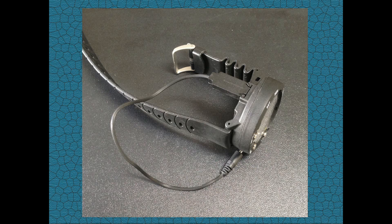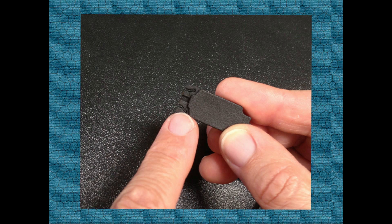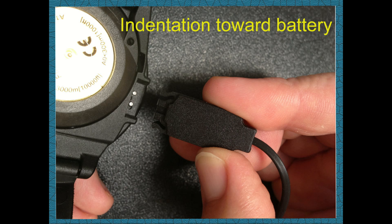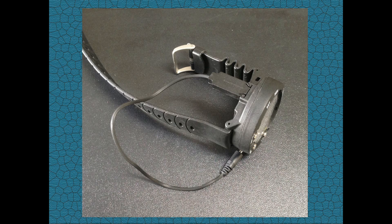First, connect the model-specific dive computer to the DC buddy using the cable included in the DC buddy kit. To connect the cable to the Suunto Z-type computer, hold the cable with the indentation facing the battery of the dive computer. Then insert the connector into the dive computer data port. Now let go as the connector is firmly secured to the dive computer.